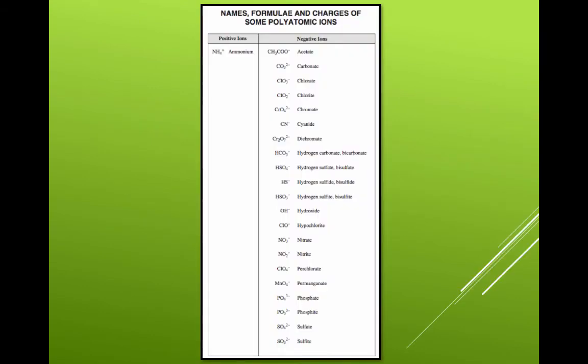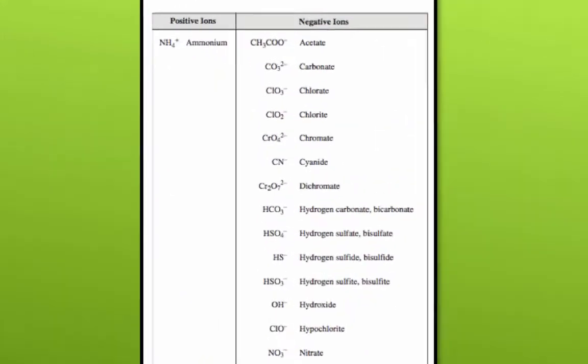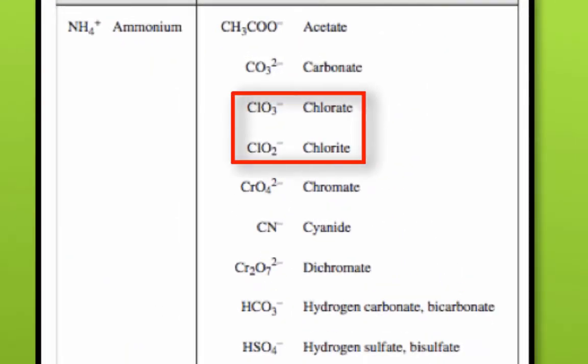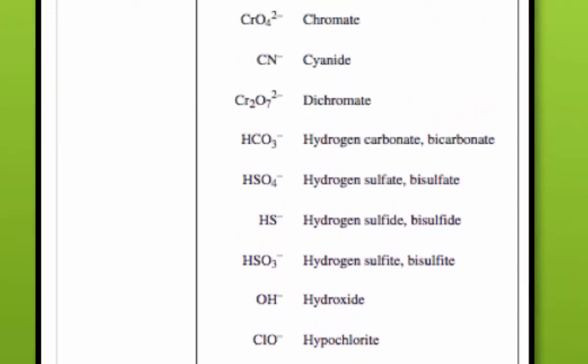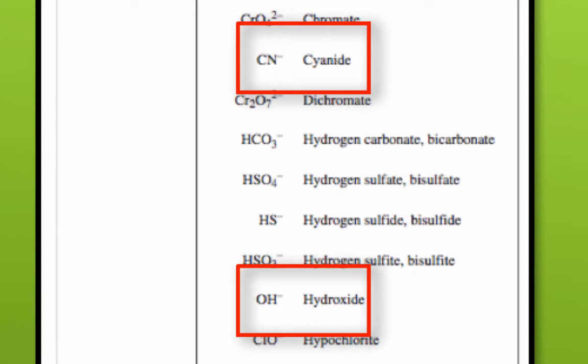The polyatomic ion is pretty easy to identify when you read the compound's name, since it usually ends in '-ite' or '-ate', like chlorite and chlorate, and nitrite and nitrate. Be careful of the two polyatomics that end in '-ide', cyanide and hydroxide. You don't want to confuse these with binary ionic compounds, which always end in '-ide'.